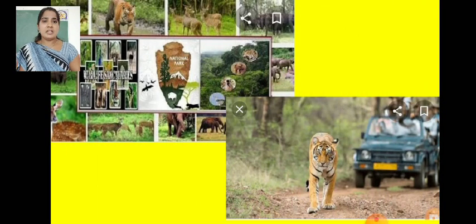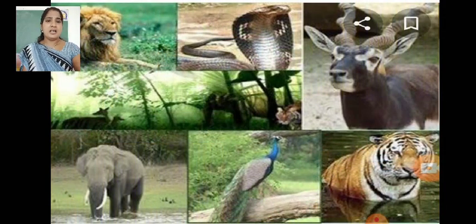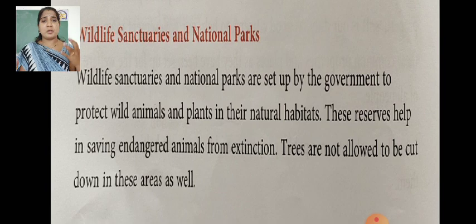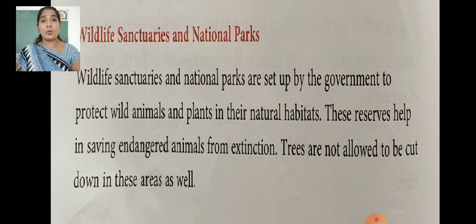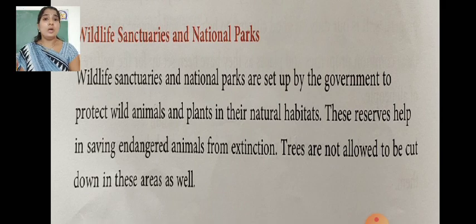See the next slide — you can see wildlife here in this picture, including national park animals like tigers. Wildlife sanctuaries and national parks are places reserved by the Government of India. You cannot go there on your own anytime, you cannot hunt any animals, and you cannot use those resources for your own benefit. Wildlife sanctuaries and national parks are set up by the government to protect wild animals and plants in their natural habitats.